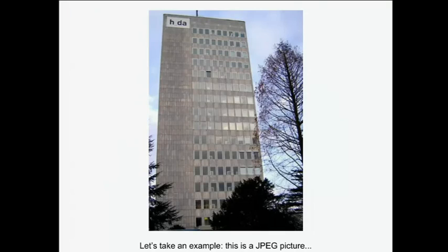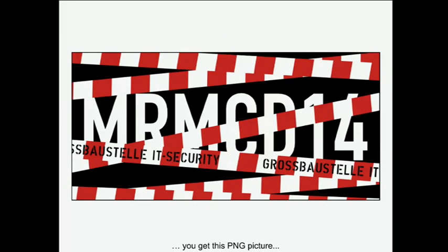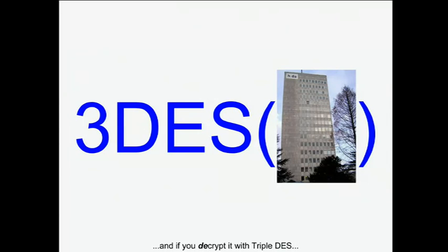Let's start with a small sentence: an encrypted file is not always encrypted — in the sense that if you encrypt a file, the output looks random. For example, take a random JPEG picture. If you encrypt it with AES, you get a random-looking PNG. If you take the same JPEG but decrypt it with Triple DES, you get a random-looking PDF.